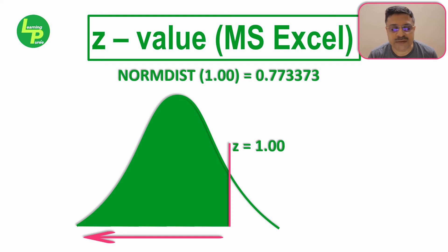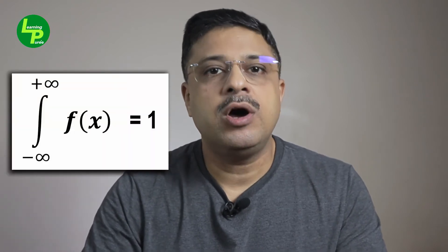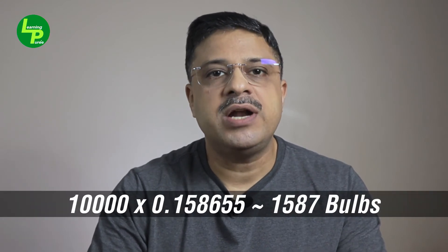However, to answer this specific question — how many bulbs with lifespan equal to or more than 1100 hours — we will need the probability under the curve from the Z value point to the right-hand side of the curve. This value is easily obtained by subtracting the probability calculated earlier from 1. Remember that the summation or the integral of the area under the curve is always 1. This area represents all the bulbs with lifespan of 1100 hours or more. By simply multiplying this number with 10,000 bulbs, which is the sample lot we are interested in, we get the total number of bulbs that have a lifespan of 1100 hours or more.